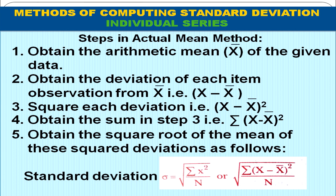The steps in the actual mean method are: first, find the mean value. Second, obtain the deviation of each item from the mean. Third, square the deviations. Fourth, sum the squared deviations. Then apply the formula: standard deviation = √(Σ(x − x̄)² / n), which can also be written as √(Σx² / n), where small x represents the deviation from the mean.